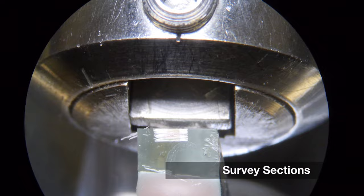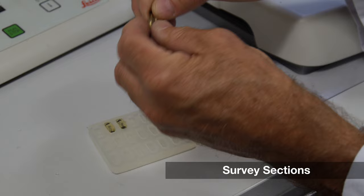As sections are cut, they float onto this water. Now that glass knives have been made, trimming and sectioning of the hardened resin block can start.